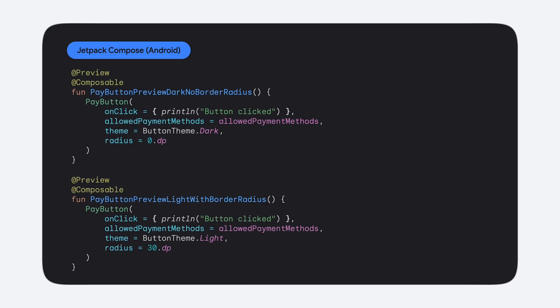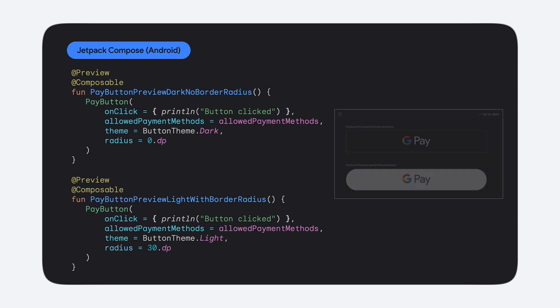To enhance your development experience, you can use the add preview annotation within Android Studio to play around with different styles of the button. This feature allows you to experiment with the button theme, radius, and placements during development.